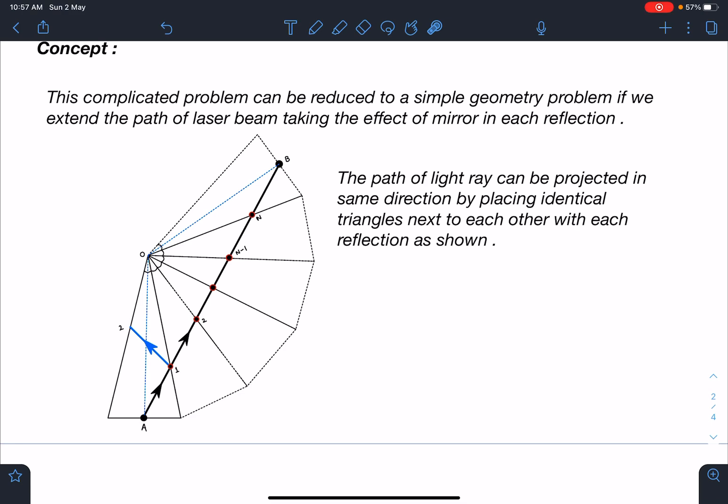So what we are going to do is: this is the triangle here, first triangle, right? And this light ray is going in this direction. After reflection it will be going somewhere here. So if we bring the same triangle next to each other and extend the same line, this will be the point of second collision.